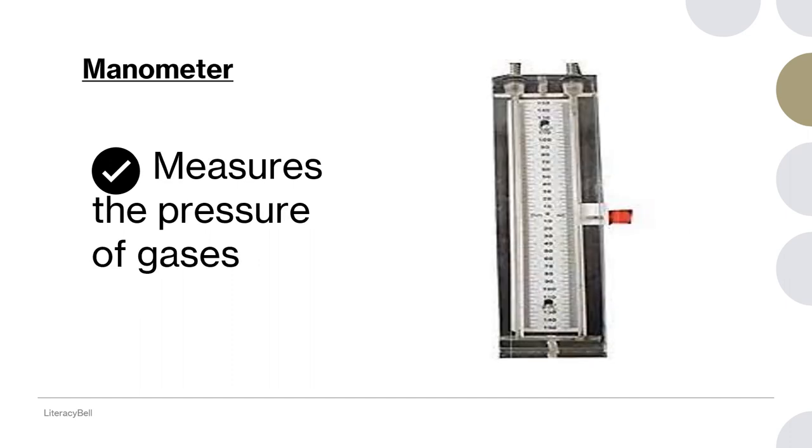The last device is manometer. Manometer is used to measure the pressure of gases. Don't confuse between barometer and manometer. Barometer is used to measure the atmospheric pressure. Manometer is used to measure the pressure of gases. Remember, barometer is for atmospheric pressure and manometer is for pressure of any gases.